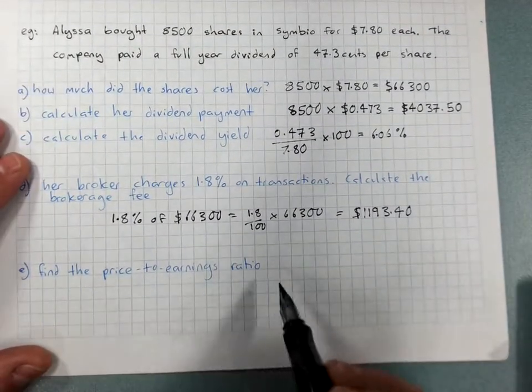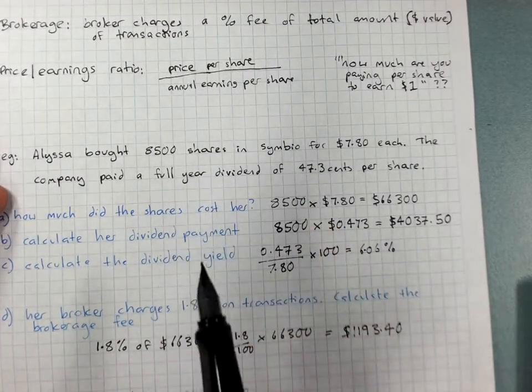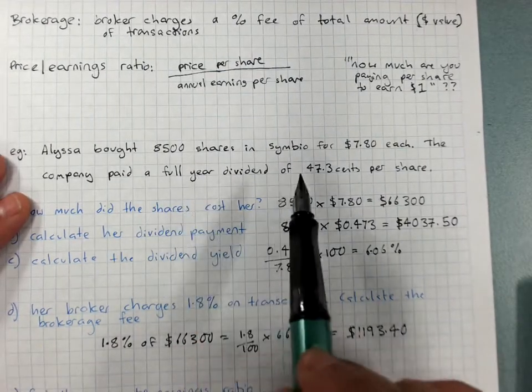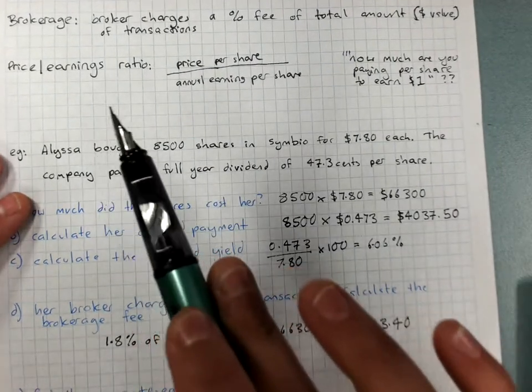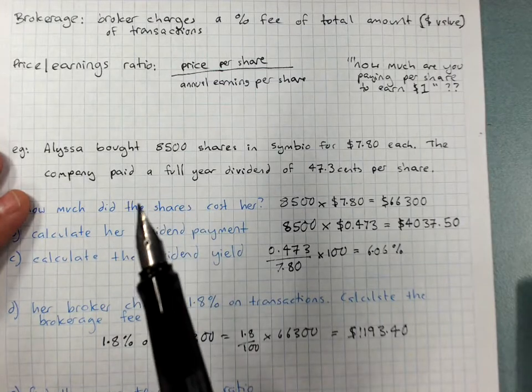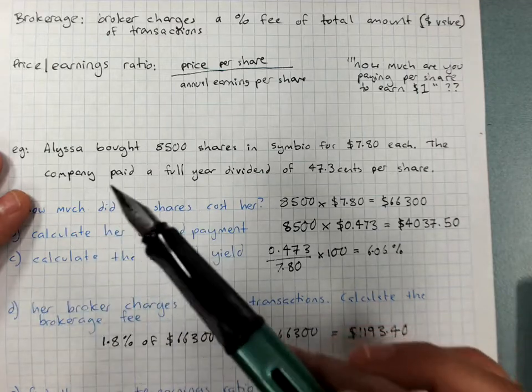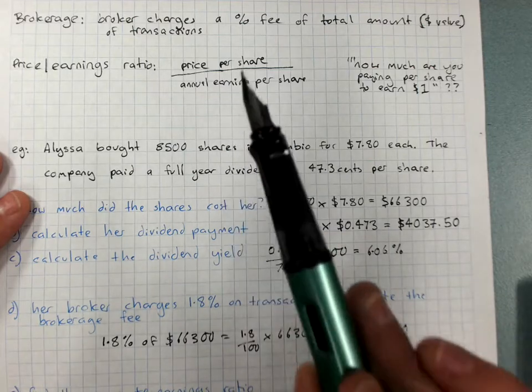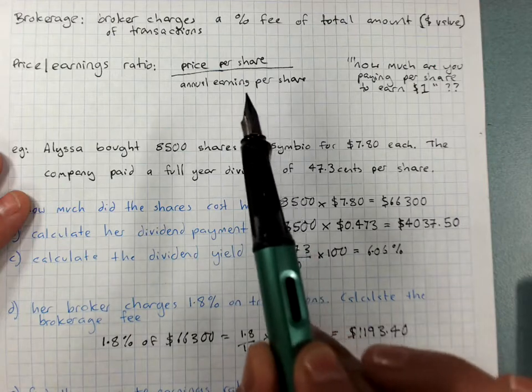And the price to earnings ratio. So remember that's the price per share divided by the annual earnings per share. Now in this situation, it's quite easy because the annual earnings per share is this much. Sometimes people will ask you to take out brokerage fees first, but usually that's not the case because we expect to only pay the brokerage fees when we sell them. Then we'll keep them for a few years, probably. And so we'll just look for this one at the price per share over the annual earnings.